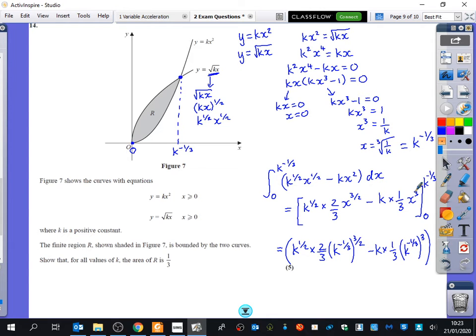But again, it's just indices. We can deal with these indices. Then my next bit is minus k times a third, times k to the power of minus a third cubed. That was the bit where I substituted k as minus a third cubed. Do I need to substitute in 0? No, because when I substitute in 0 in place of x, both of these things will be 0, because you're multiplying by 0. So, all I need to do is I just need to tidy up some of these things that I've got. Well, this looks pretty tidy. I've got k to the half and 2 over 3. What is k to the power of minus a third times to the power of 3 over 2? What do you do with the powers there?